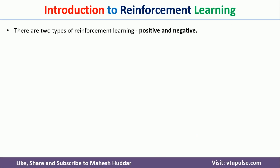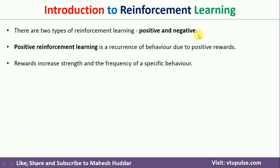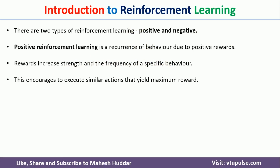There are two types of reinforcement learning: positive reinforcement learning and negative reinforcement learning. Positive reinforcement learning is the recurrence of behavior due to positive rewards. Recurrence means the same behavior will be repeated again and again. The positive rewards increase the strength and frequency of such actions in the future. These positive rewards encourage the agent to perform the same actions and get the maximum reward.